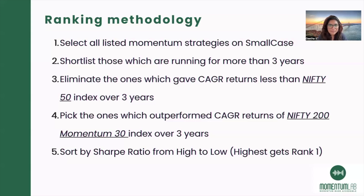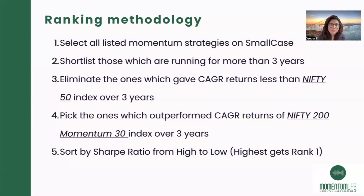We have five steps in the ranking methodology. The first is choosing the entire universe of small cases we are going to compare. The second step is eliminating any small cases that have not been running for at least three years — why three years and not two, five, or four has been explained in Part 1. The third step is looking at Nifty 50 as a benchmark index and eliminating any small case strategies that have not beaten the CAGR of the Nifty 50 index. As a fourth step, we look at a more comprehensive index — the Nifty 200 Momentum 30 index — and select only those small cases which were able to beat the CAGR of the Nifty 200 Momentum 30 index.